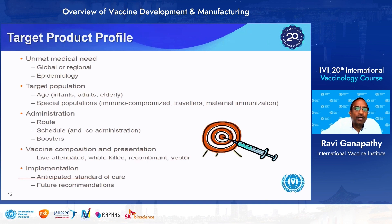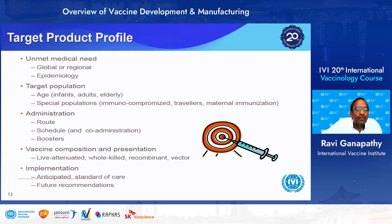The Target Product Profile (TPP) defines the unmet medical need, the disease targeted, the global or regional epidemiological status of the disease, the target population by age and any special populations, the route of administration, the schedule and any boosters needed, the type of vaccine produced, and implementation details — including anticipated standard of care and future recommendations. All of this is covered in the Target Product Profile.